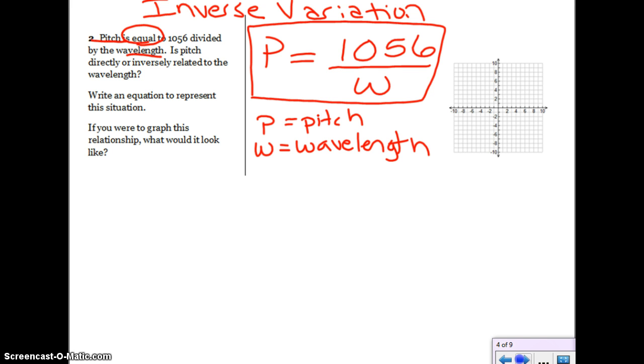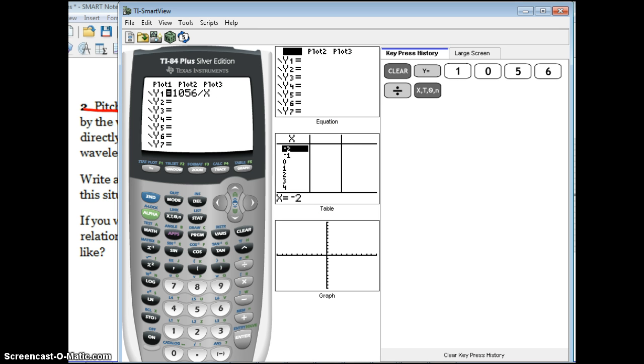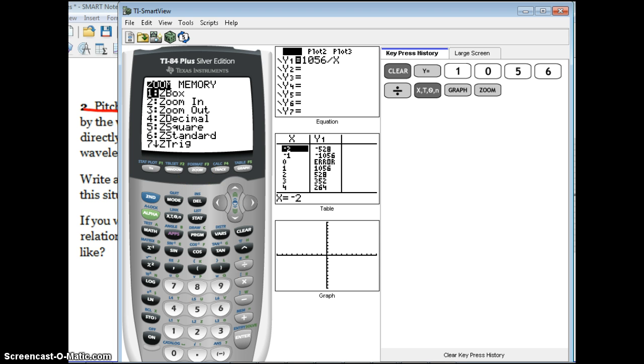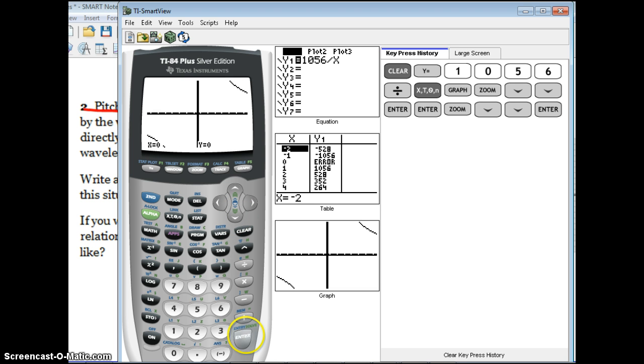Is pitch directly or inversely related to the wavelength? Remember, directly looks like a line. So I'm not sure this one is actually going to look like a line. In order to check this, I want to switch my P and my W to my Y and my X. So I'm going to take Y equals 1056 divided by X. And I'm going to pause here to grab my calculator. So if you guys have your calculator with you at home, go ahead and pause here and graph this on your calculator, and then let's compare what our graphs look like. Alright guys, so in our graphing calculator, we're going to put in the 1056 divided by X and we're going to graph it. And the question was, does it look linear? So I can't see it, so I'm going to have to zoom out. The question was, does it look linear? Oh my goodness. Well, I see part of it right now. It definitely does not look linear. I'm going to zoom out one more time just to make sure that I know exactly what it looks like. Yeah, definitely not linear.